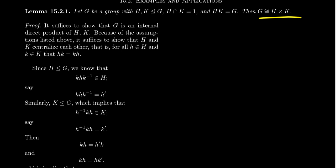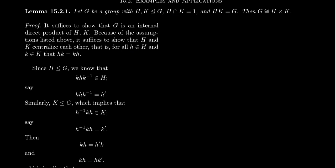Our strategy of proof is to argue that G is the internal direct product of H and K. To be an internal direct product, we need that the product of the two sets H and K is the whole group, their intersection is trivial, and they centralize each other — that is, for all H in H and K in K, we have HK equals KH. So we have to argue that the normality of these two subgroups forces the elements to centralize each other.